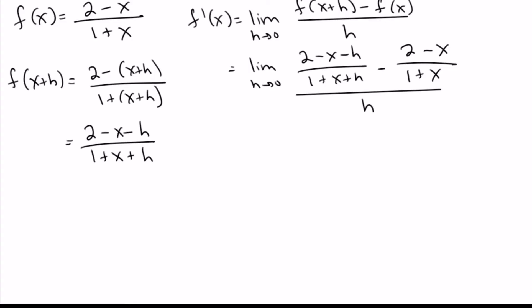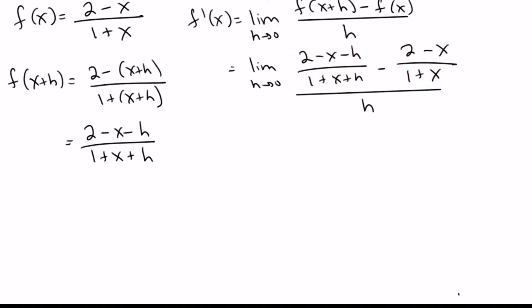What's happening is really similar to the last problem: on top we've got two fractions that we're subtracting, and we just want to be able to actually subtract them. The way to do that is to get a common denominator — multiply each fraction by what it's missing. On the left, that's (1 plus x), and on the right it's (1 plus x plus h). This is a little annoying just because it's so ugly, but if you trust the process, all the algebra works out well at the end.